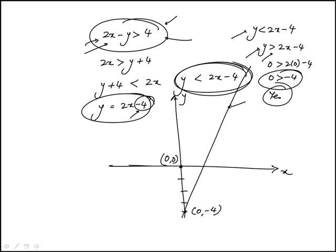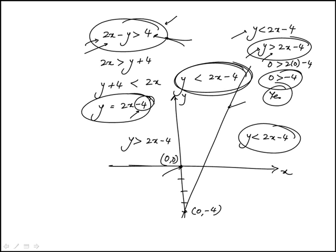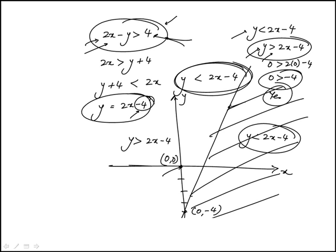Which means that this point satisfies this inequality, which means that that section is y is greater than 2x minus 4 and the other one is y is less than 2x minus 4, which is the same as the original inequality. So this is the solution, this region, this half plane is the solution to the original inequality.